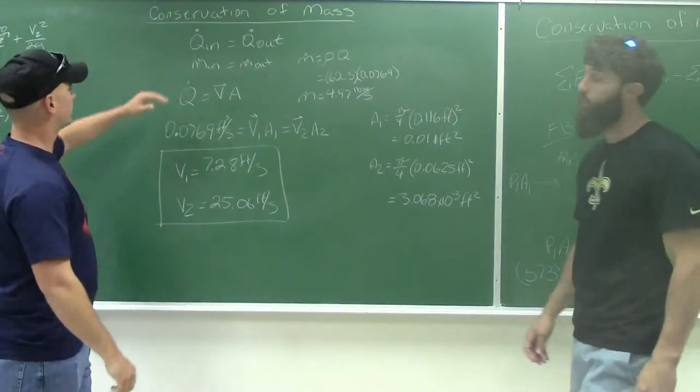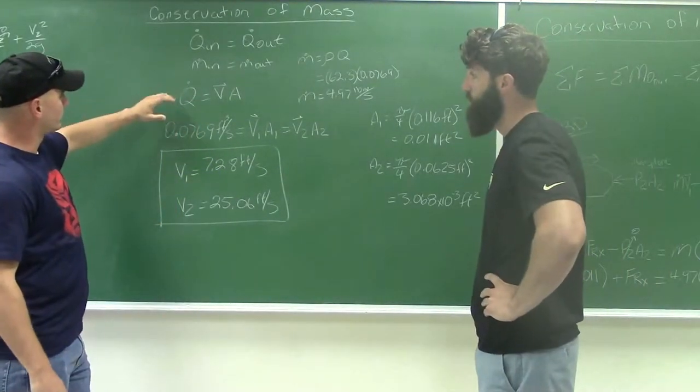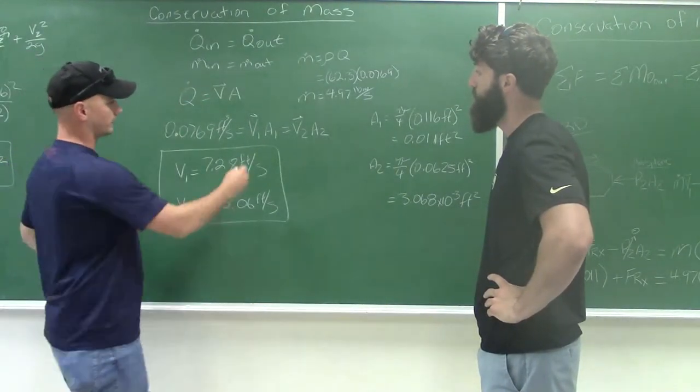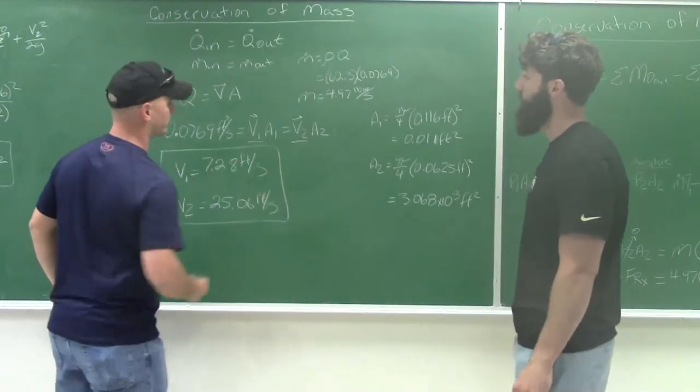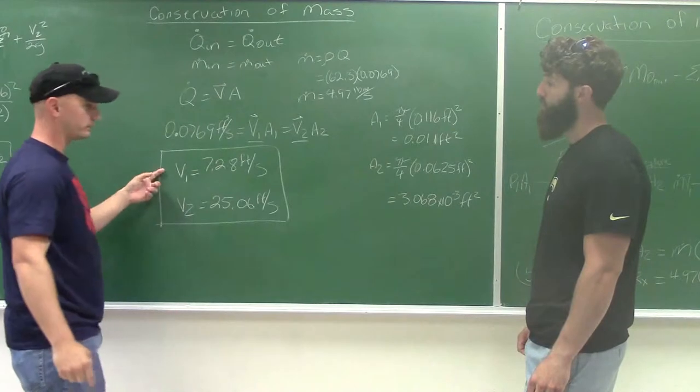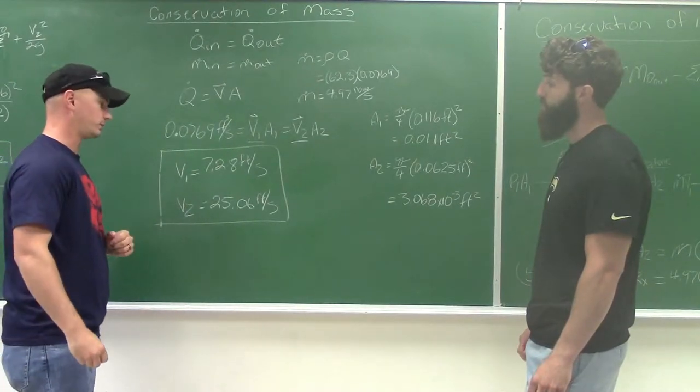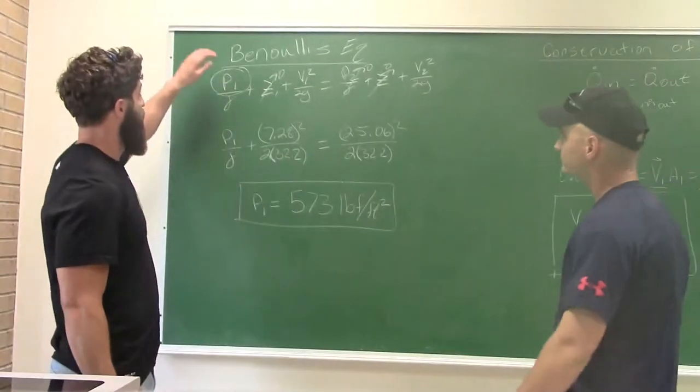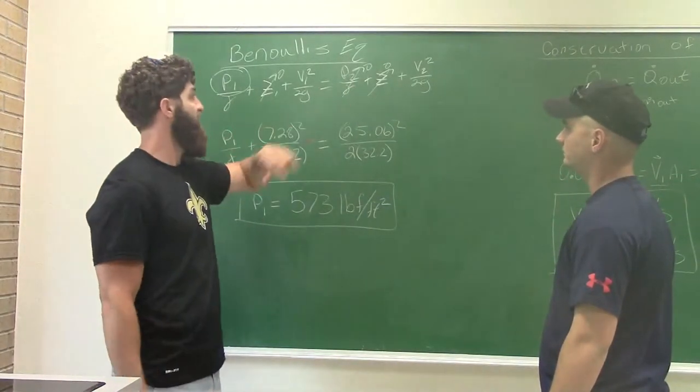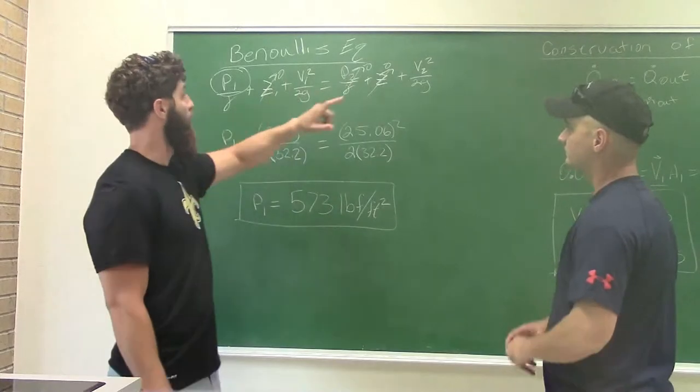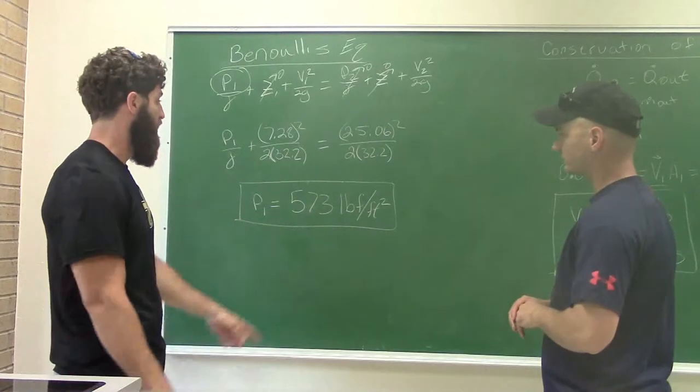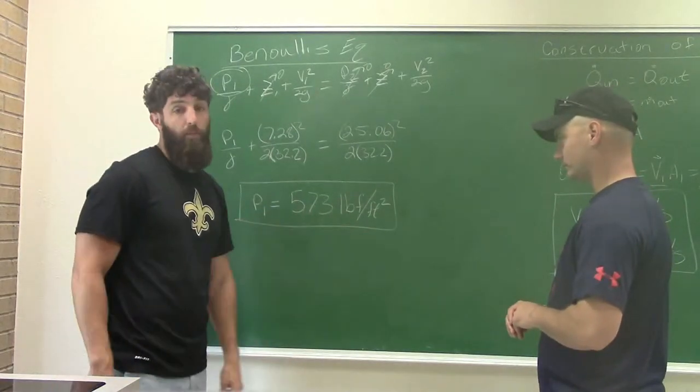Alright, so now that we have our Qin, our Q equals velocity times the area. We have our Q, and we can also find our V1 and V2 because everything equals each other. We come out to be 7.28 feet per second for our V1. Our V2 is 25.06 feet per second. So now that brings us to Bernoulli's equation. We're solving for P1 here. We know our Z's cancel because there's no elevation change. We know both of our V's, so we can plug it into our equation, and we come out with 573 pounds of force per foot squared.